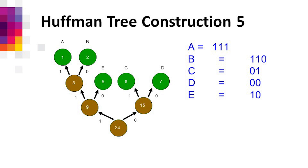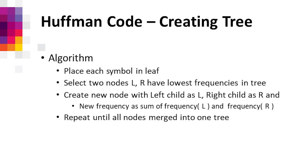In Huffman encoding: A is 111, B is 110, C is 01, D is 00, E is 10. The algorithm is: place symbols in leaves, select the 2 nodes with the lowest frequency (left and right), merge these 2 nodes creating a new node with frequency equal to the sum of the two frequencies, and repeat until all nodes are merged into one tree.